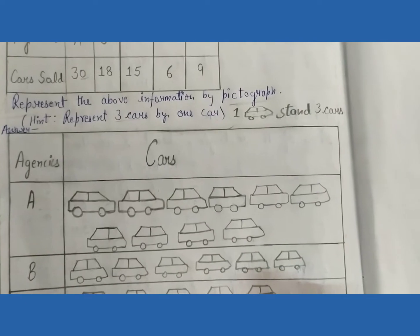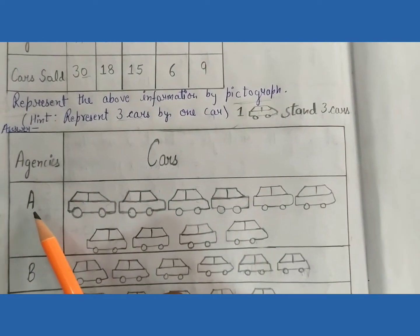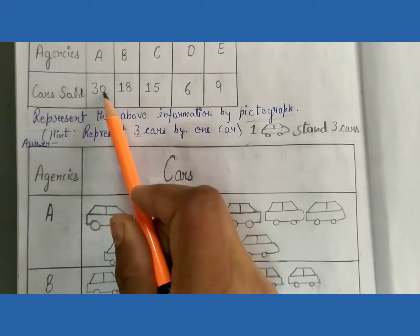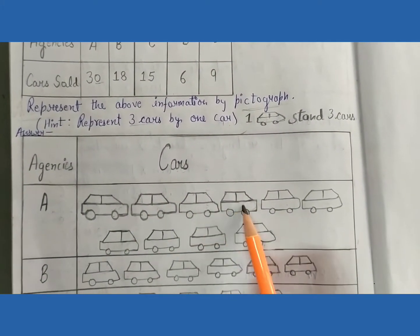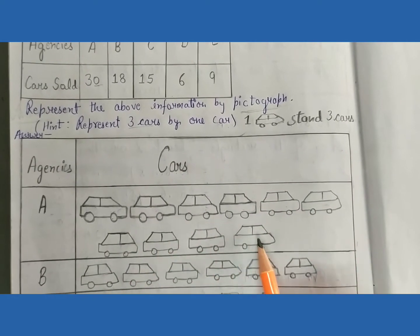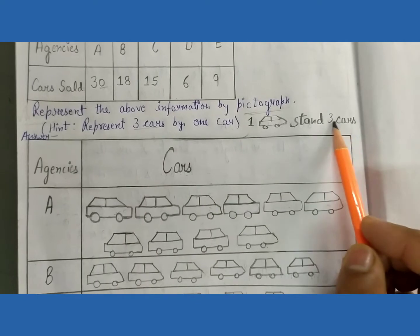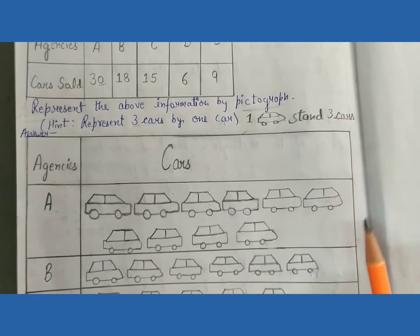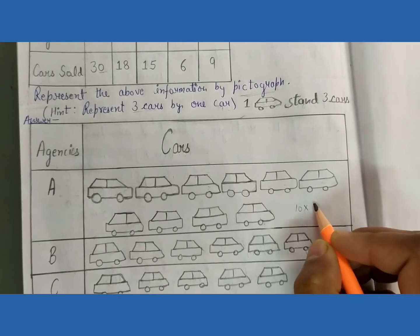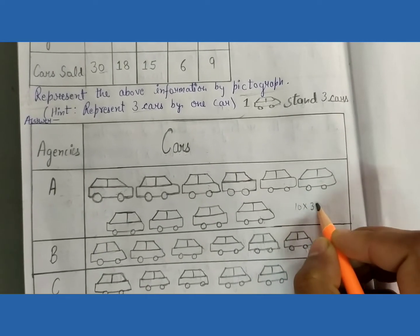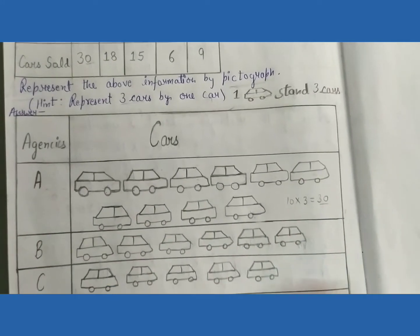Now start the answer. Agency A: number of cars is 30, so draw 10 car symbols, because 1 car stands for 3 cars. 10 multiplied by 3 equals 30. Agency B: total 18 cars, draw 6 car symbols. Each car represents 3 cars, so 6 multiplied by 3 equals 18 cars.